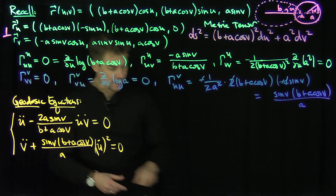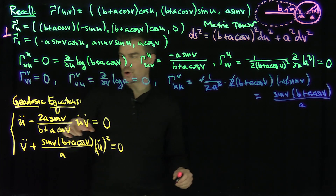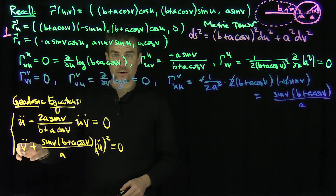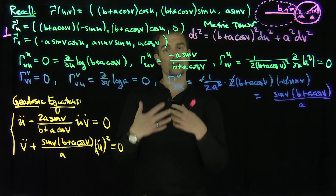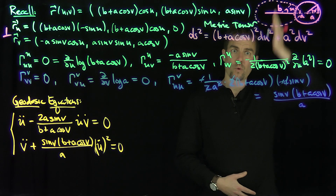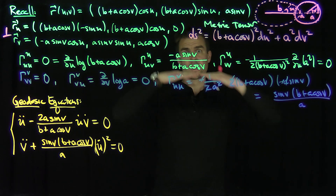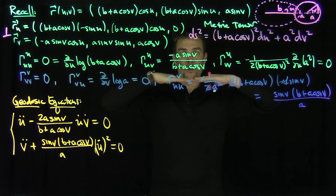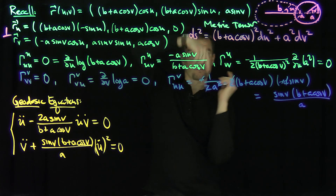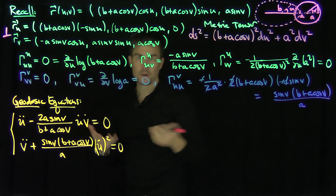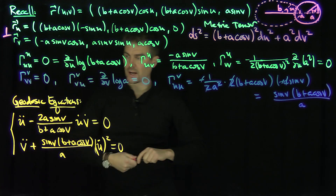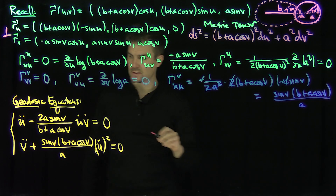Now we'll work through the non-trivial cases. Of course, there's a trivial case when u̇ = 0: the first term vanishes, this term vanishes, and v̈ = 0, giving linear solutions — these correspond to meridians and parallels, the two traditional ways of slicing a donut. Those correspond to geodesics in certain cases, but let's work on the non-trivial cases.